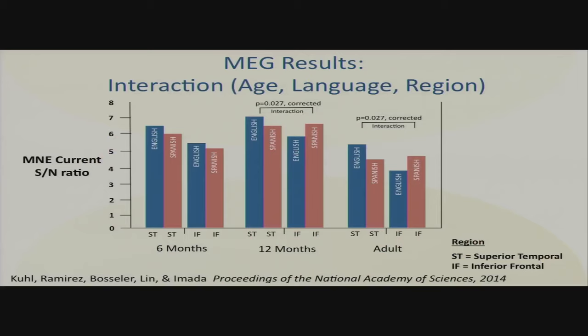The statistical result is this: when you look at six-monthers, there are no differences between non-native and native in superior temporal and inferior frontal — sensory, motor — all the same for Spanish and English. By 12 months of age, and in the adult, you see the same pattern. Firing in superior temporal auditory goes up for the native, but up higher in inferior frontal for the Spanish. So this V-shaped curve — the 12-monther looks very much like the adult. We're trying to track how early in development this begins.